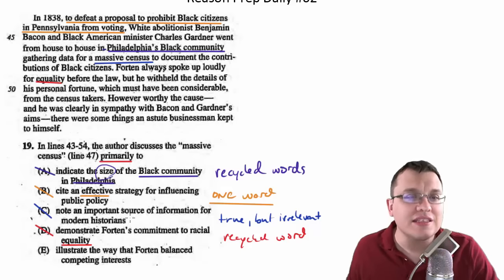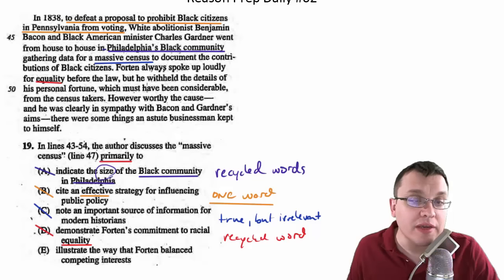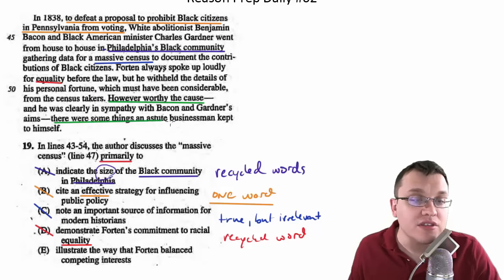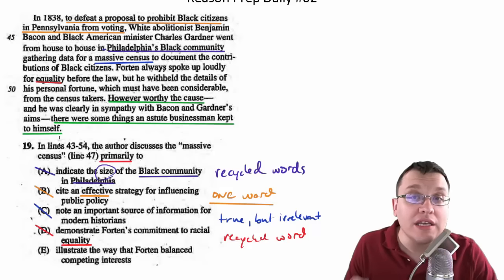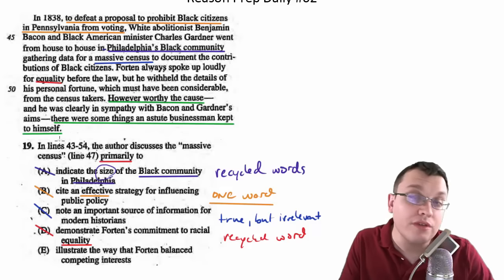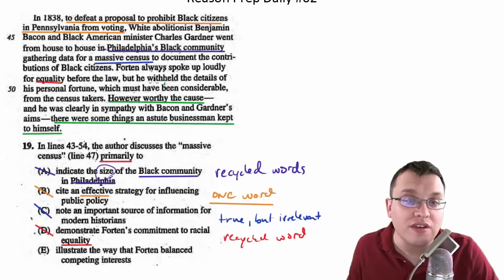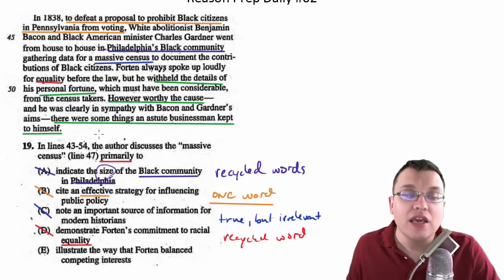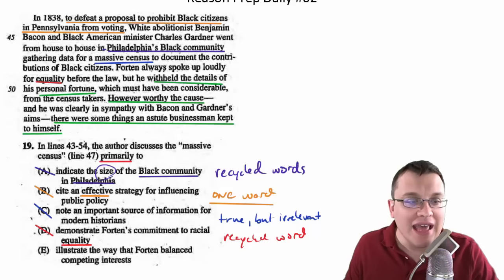When we get into it, E actually works. Notice how this passage ends: 'Fortin always spoke up loudly for equality before the law, but he withheld the details of his personal fortune, which must have been considerable, from the census takers. However worthy the cause — and he was clearly in sympathy with Bacon and Gardner's aims — there were some things an astute businessman kept to himself.' Fortin has two interests: his belief in equality before the law and what Bacon and Gardner are doing, but also as a businessman, he's withholding the details of his fortune — some things he's got to keep to himself. He's trying to balance his personal and public interests. That's why E fits, and that is the point of this discussion of the census.